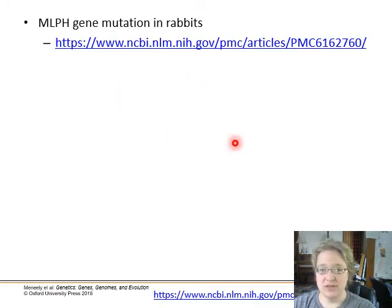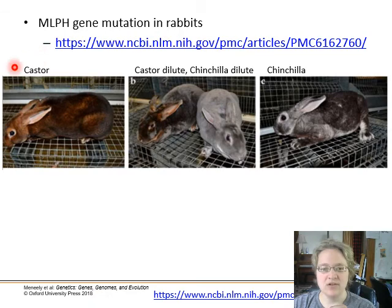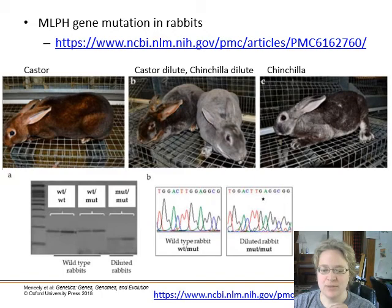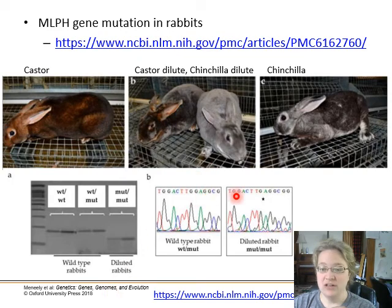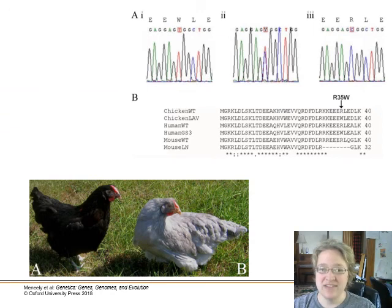Similar to dogs, the melanophyllin gene causing dilution and iridescence occurs in other animals as well. In rabbits, we have castor patterning and chinchilla patterning, and a mutation in the melanophyllin gene gives a dilute coloration of both. In this case, instead of a single nucleotide switch, we have a nucleotide deletion — the sequence TTGGAG shortens to TTGAG — losing one residue. Just this one nucleotide deletion gives a pretty significant visible difference in coat sheen and color.